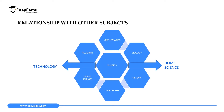Any subject that we learn in high school depends on physics, and sometimes physics depends on some topics like mathematics to express its laws and principles and ideas. We are going to look at how physics is related to biology, history, geography, home science, religion, mathematics, and technology.